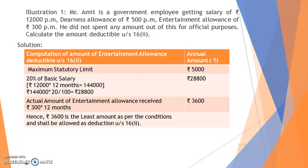Maximum statutory limit: Rs. 5,000. Next, 20% of basic salary — Mr. Amit's monthly salary is Rs. 12,000, multiplied by 12 months equals Rs. 1,44,000; 20% of this is Rs. 28,800. Actual entertainment allowance received is Rs. 300 per month, multiplied by 12 months equals Rs. 3,600. The least of these three amounts is Rs. 3,600, so Rs. 3,600 shall be given as a deduction under Section 16 subsection 2.